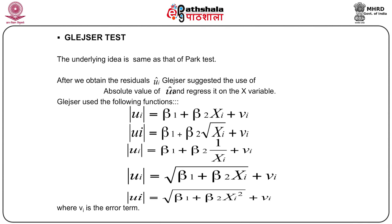The second formal method is the Glejser test. The underlying idea is the same as the Park test. However, after obtaining residuals u_i-hat in the first stage, Glejser suggested using the absolute value of the estimated residuals instead of the square, and regressing it on the explanatory variable x.